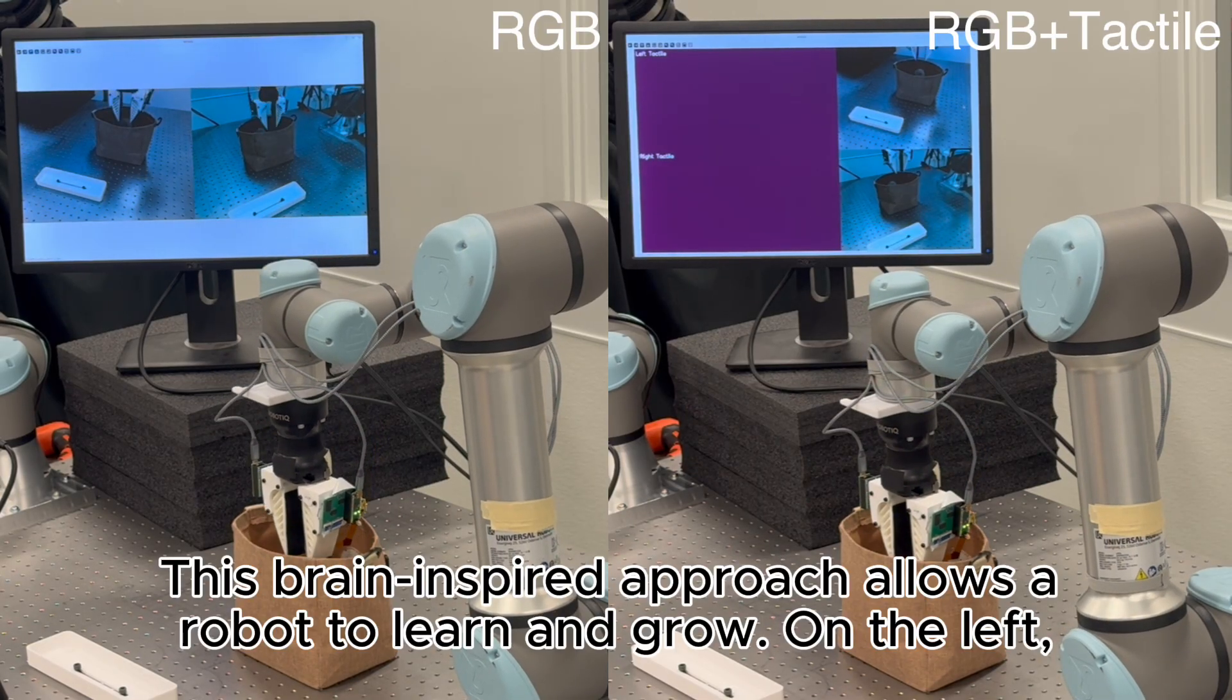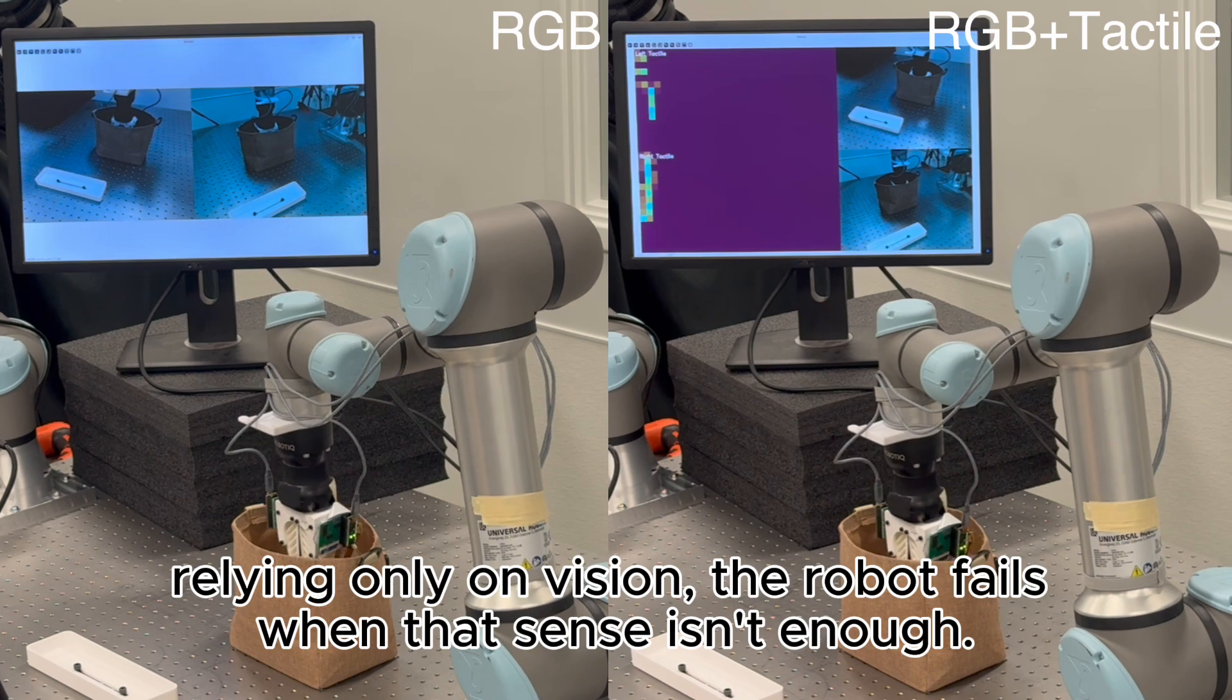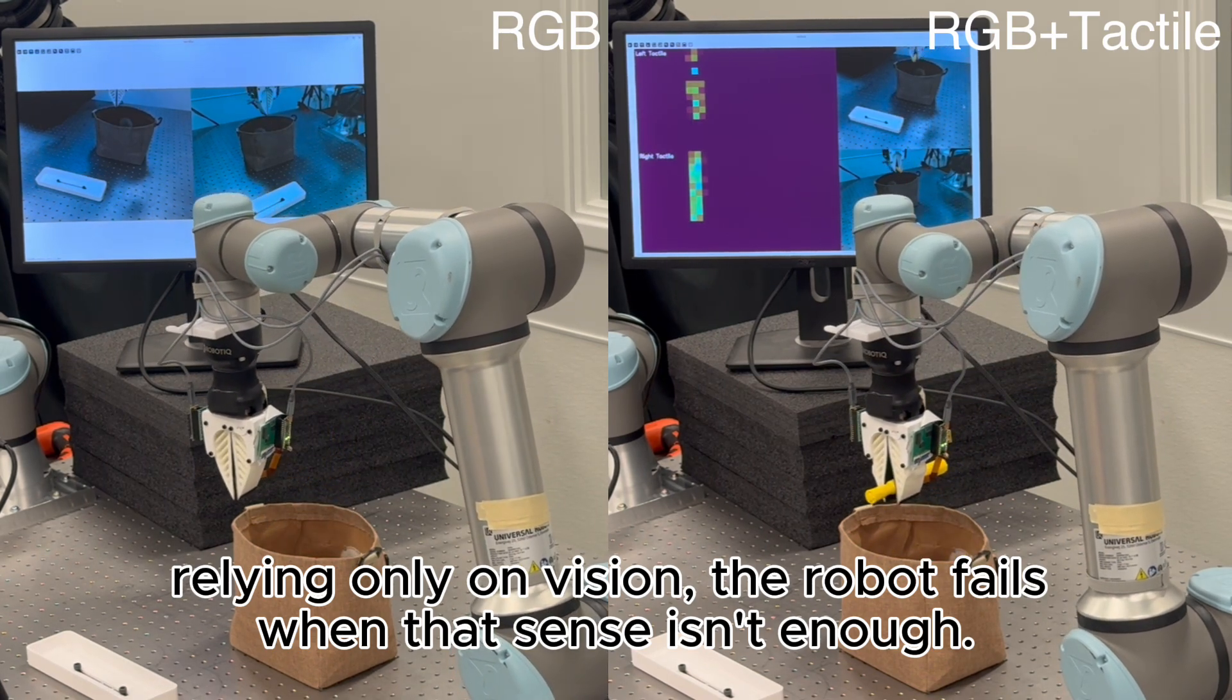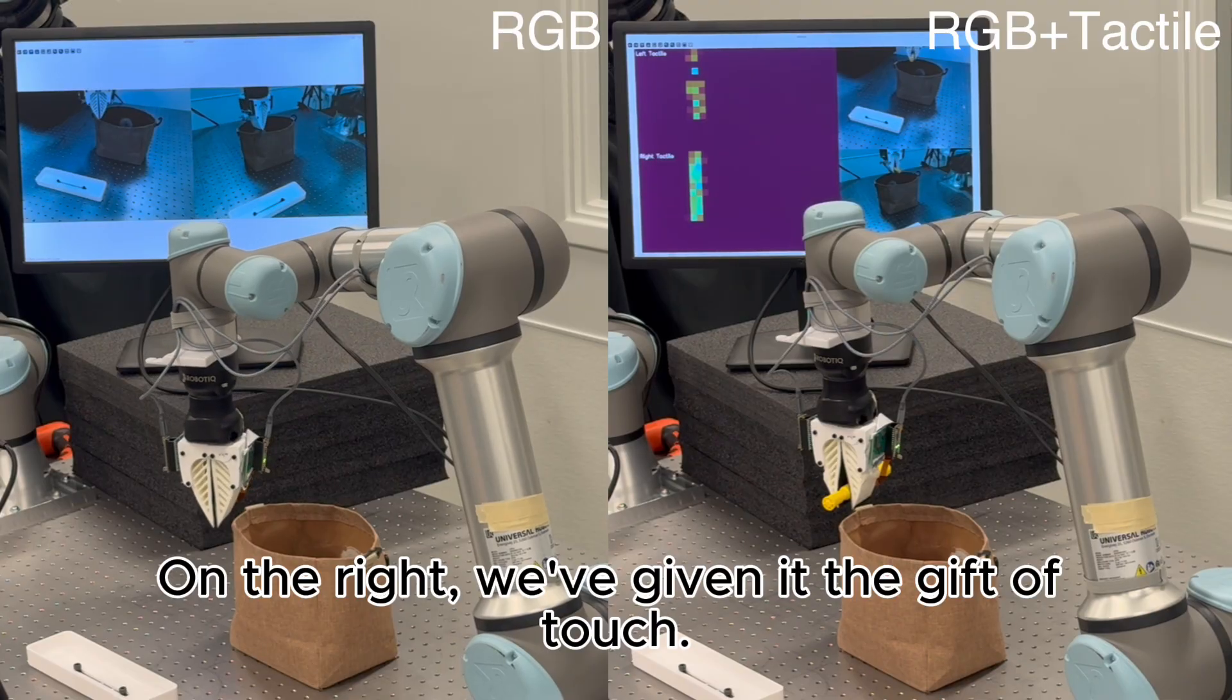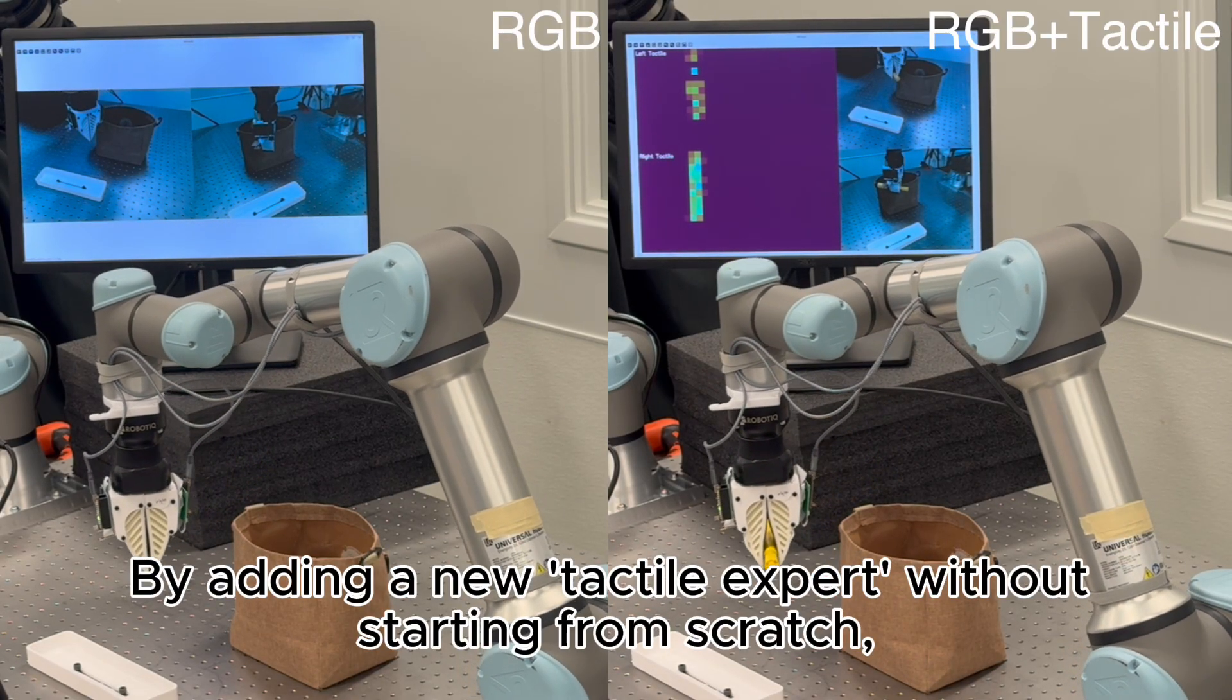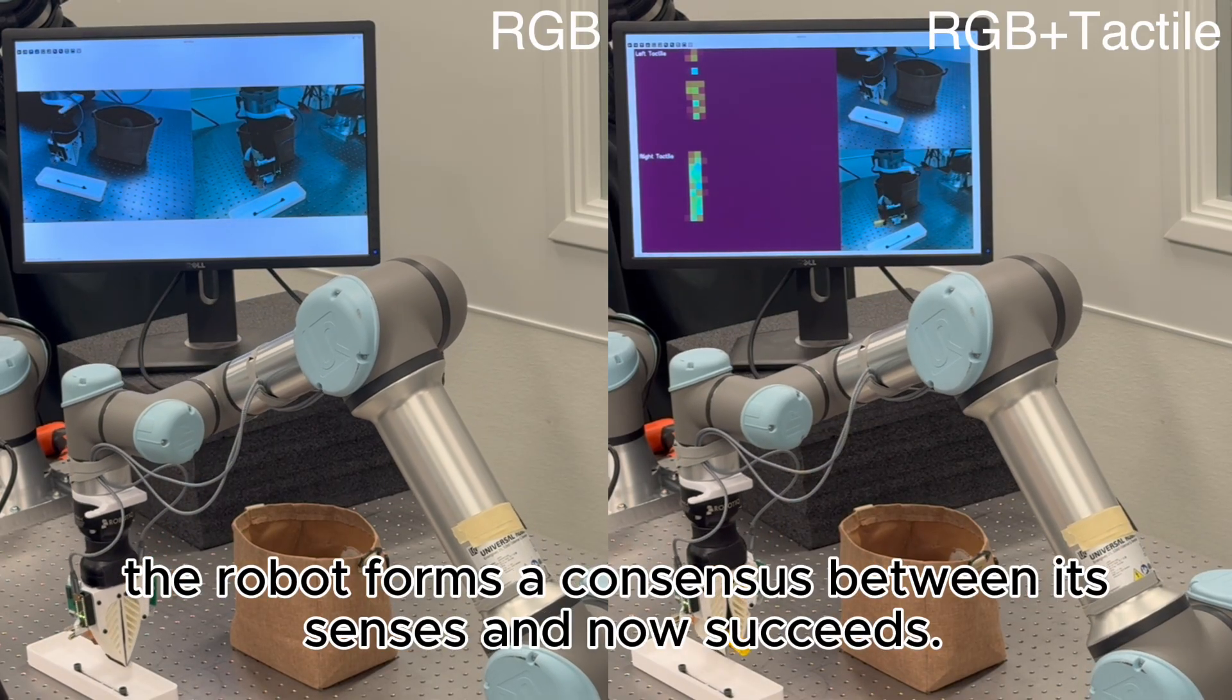This brain-inspired approach allows a robot to learn and grow. On the left, relying only on vision, the robot fails when that sense isn't enough. On the right, we've given it the gift of touch. By adding a new tactile expert without starting from scratch, the robot forms a consensus between its senses and now succeeds.